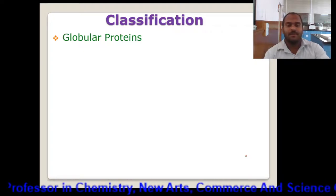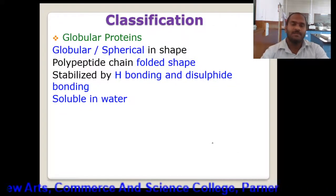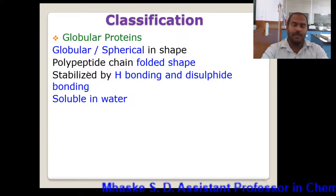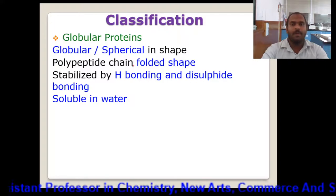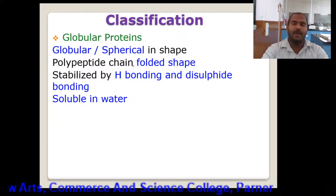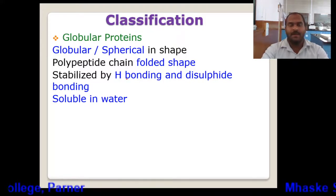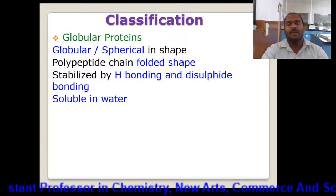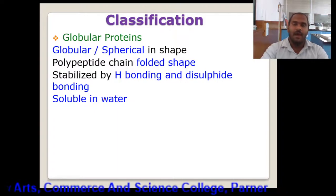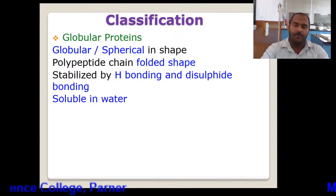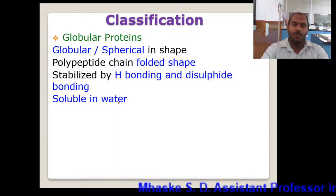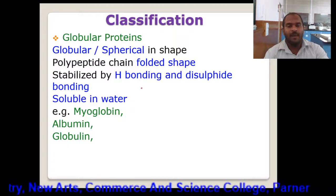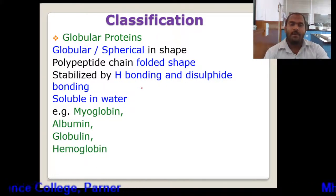Now let's consider the next class based on shape, that is globular protein. Globular proteins have either a globular or spherical shape. The polypeptide chain is folded, and due to that folding we get a spherical shape. It is stabilized again by hydrogen bonding and disulfide bonding, and they are soluble in water. The reason is the hydrophilic nature of the amino and carbonyl groups, which results in solubility in water for the globular proteins. Examples of globular protein are myoglobin, albumin, globulin, and one important example is hemoglobin.